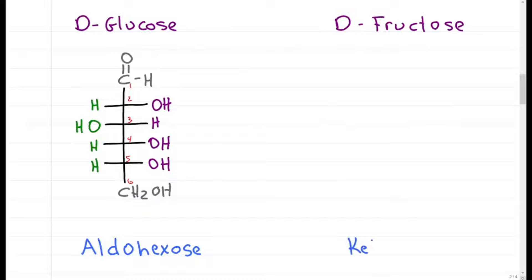D-fructose is a ketohexose, that's a 6-carbon sugar with a ketone instead of an aldehyde. We start with the skeleton and add the ketone at position 2, an achiral CH2OH at the top and bottom, and then we'll follow the same pattern.